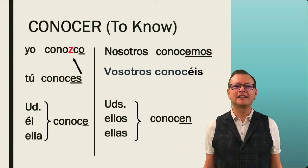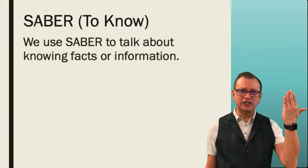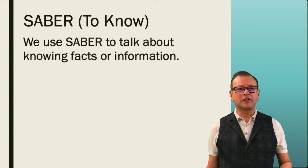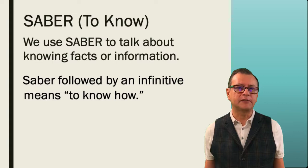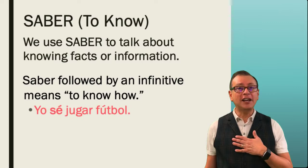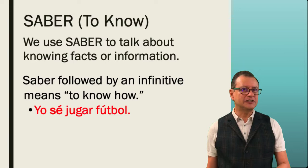The verb saber means 'to know' — but in what sense? It's to know something, to have information about something. It's a little bit trickier because sometimes saber is followed by an infinitive, in the case of knowing how to do something. For example, 'yo sé jugar fútbol' means 'I know how to play soccer.' Notice that the second verb is non-conjugated.